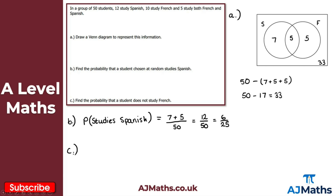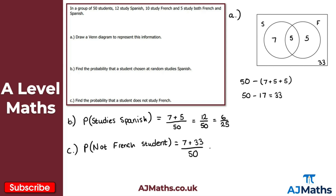For part C, we find the probability that a student does not study French. The numbers representing students not studying French are 7 (Spanish only) and 33 (neither), so that's 7 plus 33 over 50, giving us 40 over 50, which simplifies to four fifths. That's our solution to question 1.